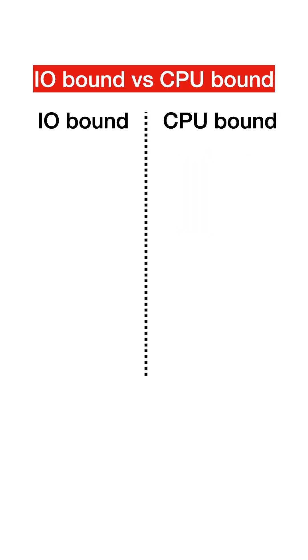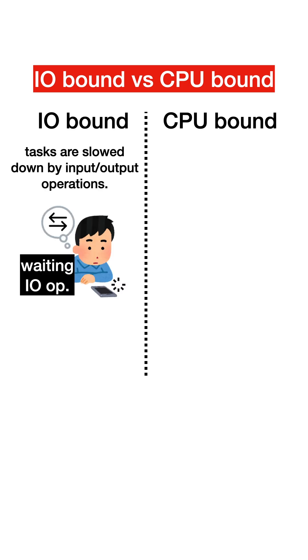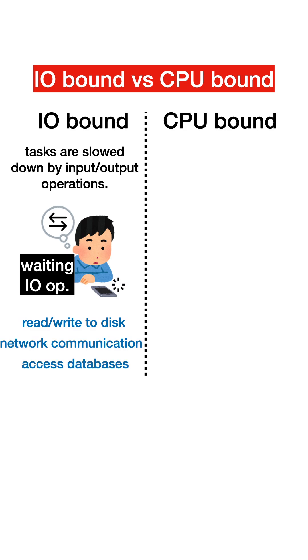IO-bound tasks are those where the bottleneck is due to frequent IO Burst. In other words, IO-bound tasks are slowed down by input-output operations. For example, reading from or writing to a disk, network communication, or accessing databases. These tasks spend a lot of time waiting for these operations to complete.